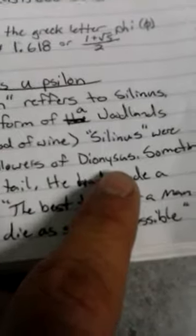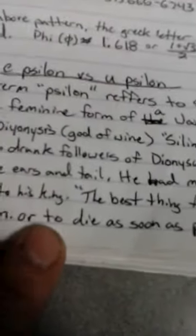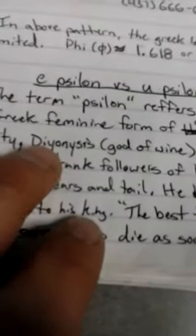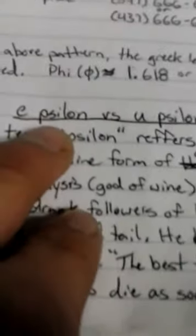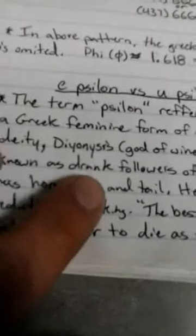Silinus were known as drunk followers of Dionysus. Alright? So now we're thinking about drunk followers of Dionysus. He sometimes has horse ears and a tail. I think of Pinocchio, when Pinocchio turned into that little thing. But that's really basically sheeple reference. He had made a prediction to his king. Alright? Now this is very important, I think. Now, Epsilon refers to Silinus, who are the followers of Dionysus. So, Cylons are Silinus's, which that's plural, Silini, Silinus, whatever. They follow Dionysus.